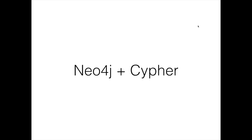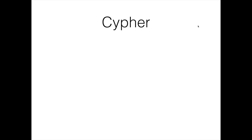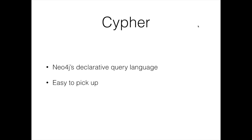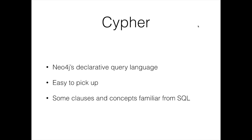Let's take that a little bit further and talk about Neo4j specifically and their query language named Cypher. It's their declarative query language. It's a pretty quick study — kind of twists your brain at first, but it's quick to pick up. Partially because the whiteboard-friendly graph data we saw — Cypher is sometimes referred to as ASCII art representing graph data. There are also some clauses and concepts that are familiar from SQL that helped me feel more comfortable as I started getting into graph databases.